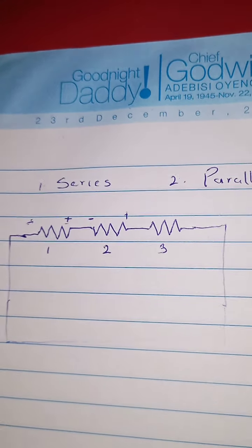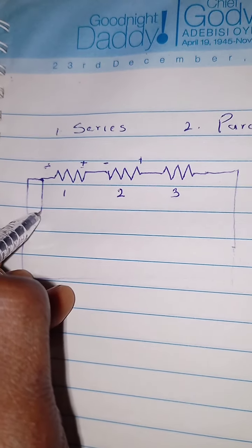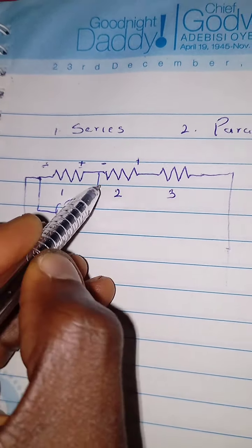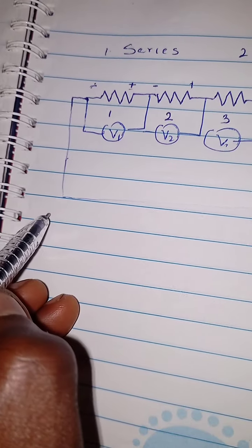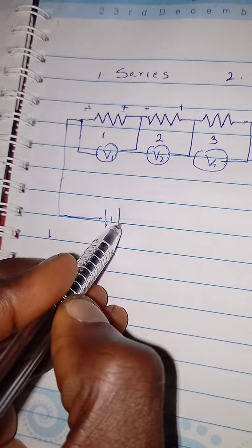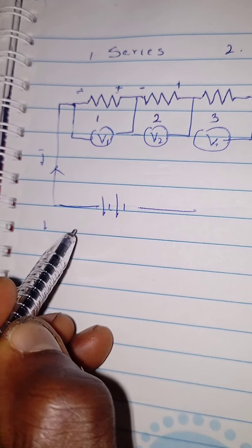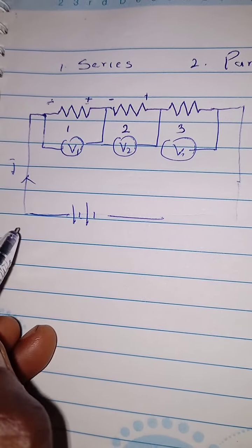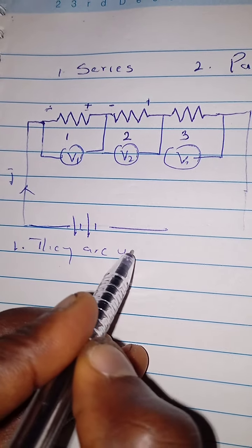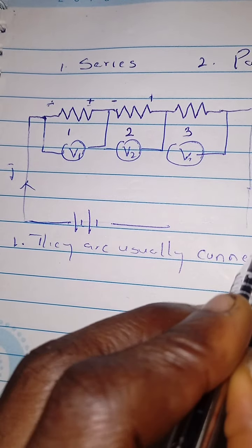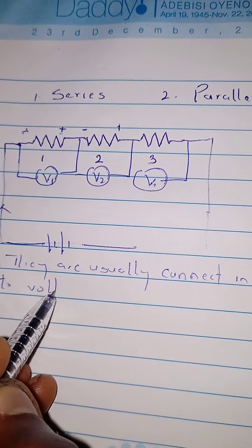Whenever resistors are connected in series, the same amount of current flows through each of them, but a different potential difference flows across each of them. Note V1, V2, and V3 — these are the potential differences across each resistor.